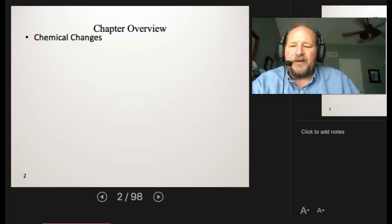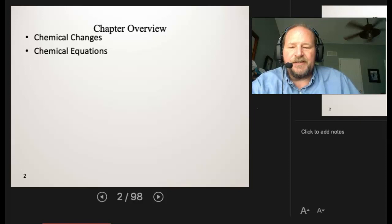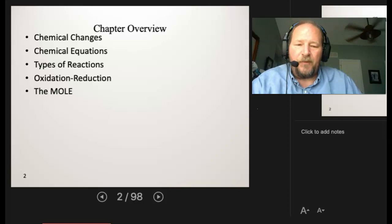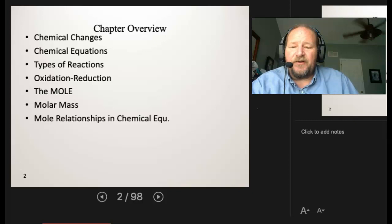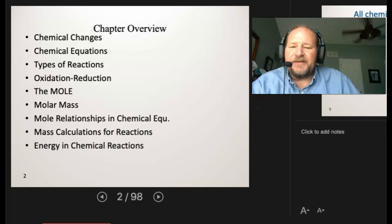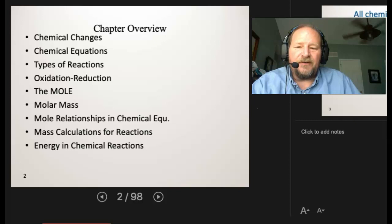So in this chapter, we're going to be looking at chemical change and focusing on chemical reactions, how to write chemical equations. Then we'll learn to balance those equations. We'll then talk about types of reactions. Then we'll focus on oxidation and reduction. And then finally, we'll look at the mole. From the mole, we'll go to molar masses. And then if you're in Chem 110, we'll be going on to look at mole relationships and chemical equations, mass calculations for the reactions, and last but not least, energy and chemical reactions. So in this segment, we're going to introduce you to chemical reactions and possibly balancing.